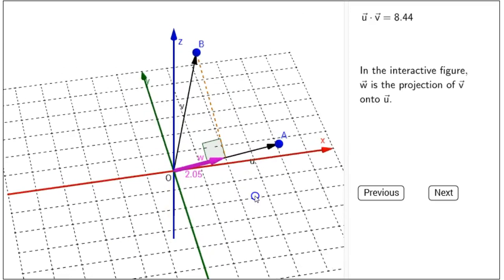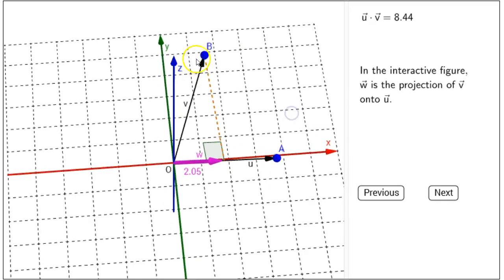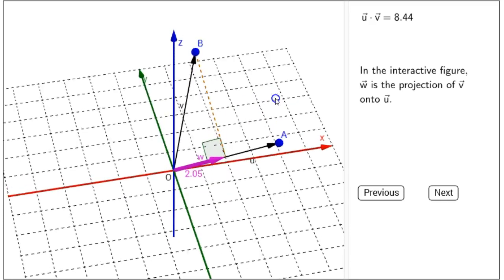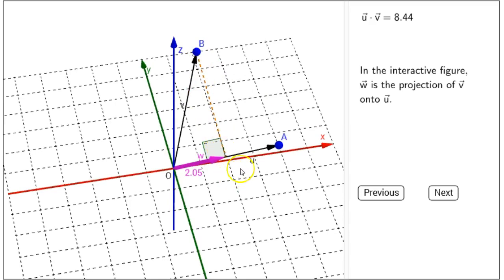And one way that people often think about projection is like a shadow. We imagine that the vector V casts a shadow onto vector U. So, that shadow is cast perpendicularly right onto U.